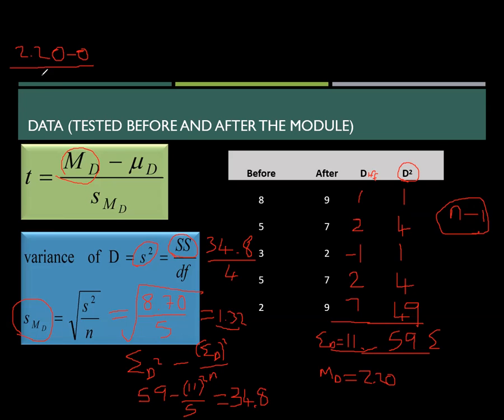So now here, this is the 1.32. And then so 2.20 minus zero, that's 2.20. So 2.20 divided by 1.32. So T is equal to 1.67. So our T, let me write here so that you can see. That is T.